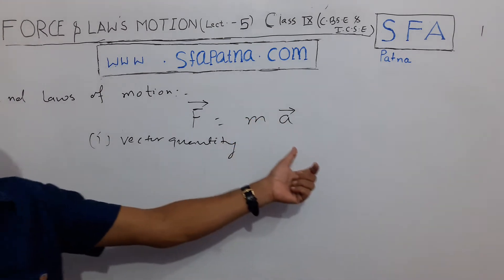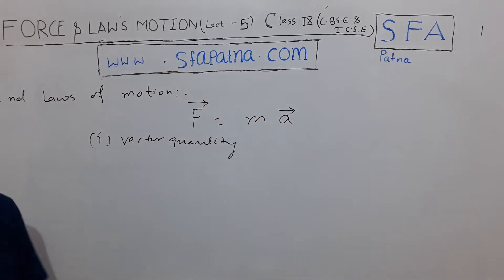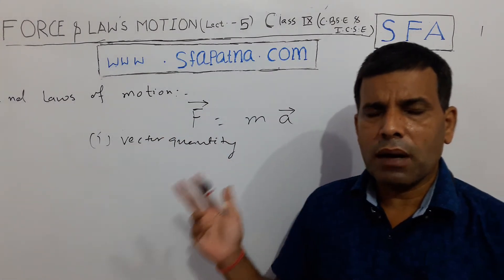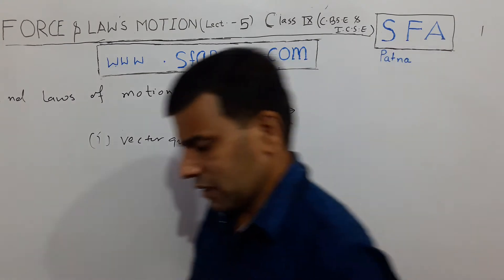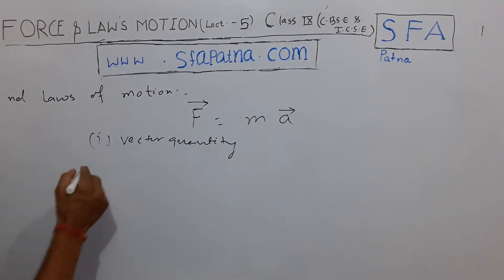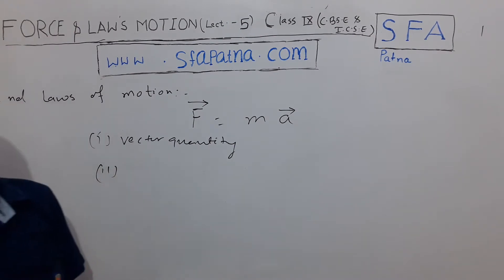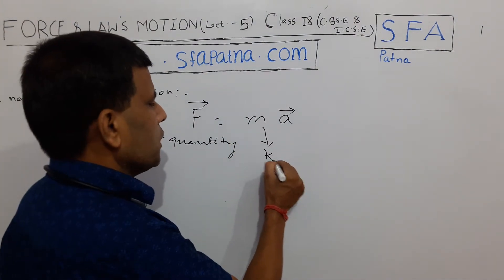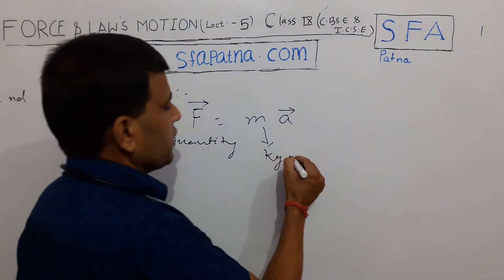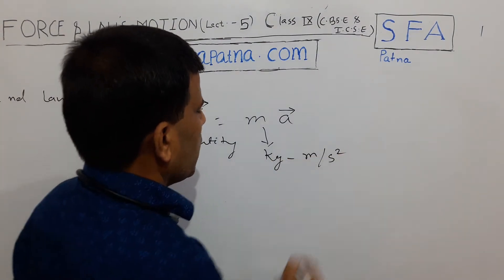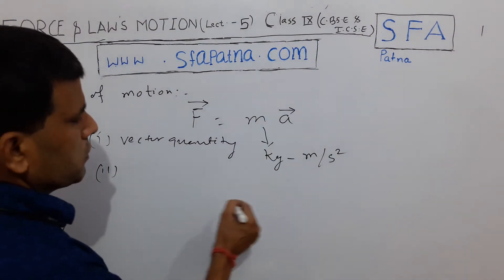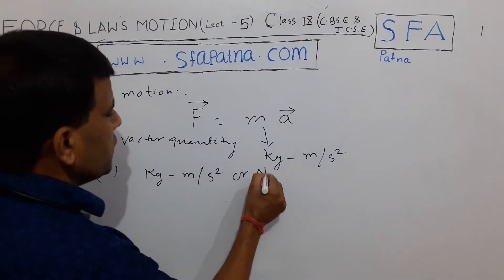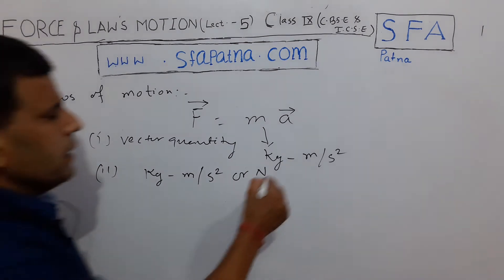Force is a vector quantity. Vector quantity means when we define force, we talk about both magnitude and direction. Both magnitude and direction are considered. Next, what is the unit of force? What is the SI unit? Mass has the unit kilogram, and acceleration has the unit meter per second square. So the unit of force is kilogram meter per second square, and we also call it Newton. This is the SI unit.